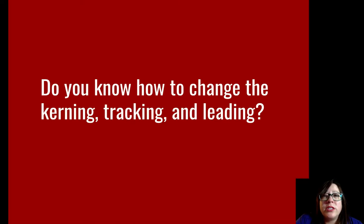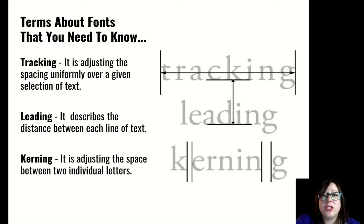Let's dive into this question specifically: do you know how to change the kerning, tracking, and leading of typography? The questions on the Photoshop test have to do with these three words and they get a little confusing, so I'm going to show you some illustrations to help. Tracking is when you can adjust the spacing in between the letters over a whole word or sentence — tracking moves all of the letters and makes them more uniform, and you have control of how far apart they are. Leading describes the distance between each line of text.